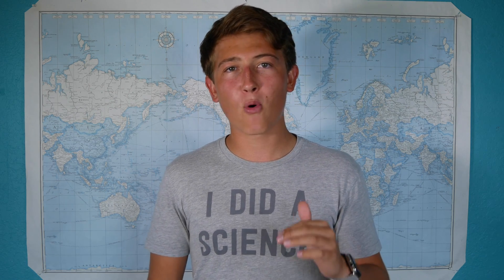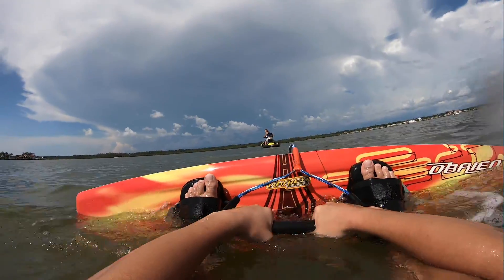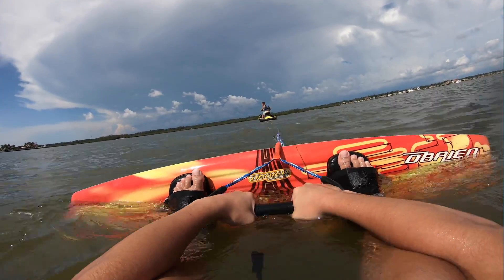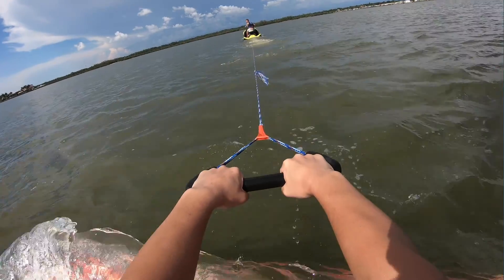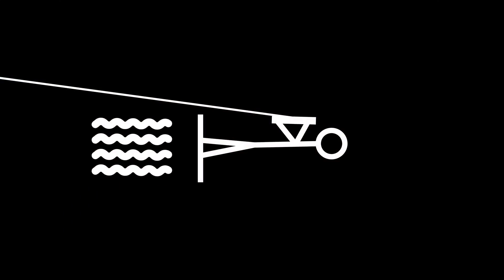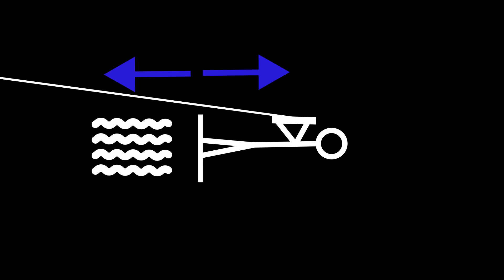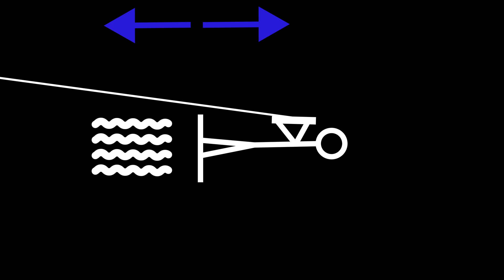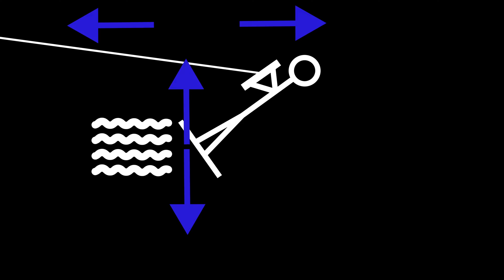In order to get lift, the angle of the board is super important. When you start out in the water, the board is vertical at a 90-degree angle. Once the boat starts pulling you, the force of water hitting the board creates drag, and that drag pulls back on the rope, creating tension. This tension can be used to push yourself and the board down, and as you get a lower angle, some of that water is diverted downwards, which in turn pushes the board up, creating lift.